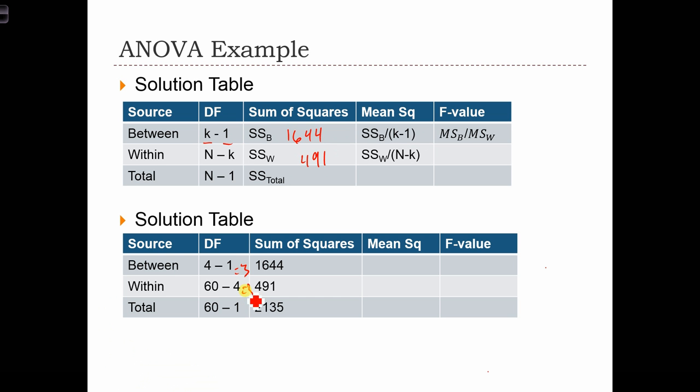And for the denominator, we've got 56. So in order to calculate the mean squares, we're going to need to divide 1644 by 3. And to calculate this, we're going to divide 491 by 56. Let me just quickly calculate those. 1644 divided by 3 is 548. And down below, we've got 8.8.